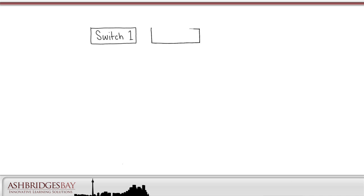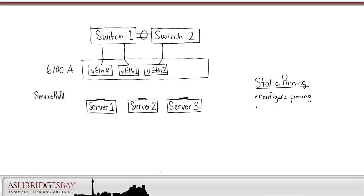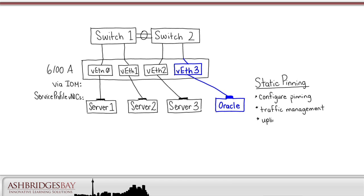It's also possible to configure static pinning. With static pinning, we connect specific service profile vNICs to specific uplinks. We can do this for traffic management, for example. We can take an Oracle server and connect it to a specific uplink. That uplink will be dedicated to the Oracle server, unless all of the other uplinks fail. In that case, the Oracle uplink would be used by the other servers as well.